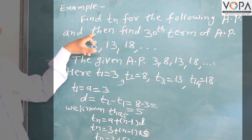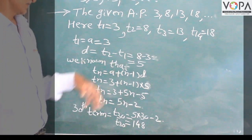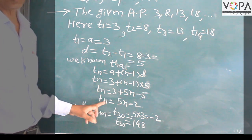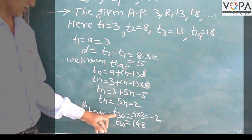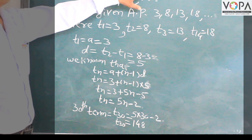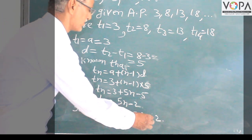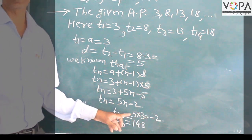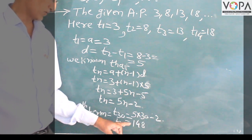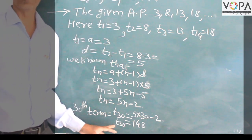Now find the 30th term of the AP. We need to find t30, so we put n equal to 30 in the formula tn equals 5n minus 2. Therefore, t30 is equal to 5 multiplied by 30 minus 2. 30 multiplied by 5 is 150. Then 150 minus 2 is equal to 148. Therefore, the 30th term of the AP is 148.